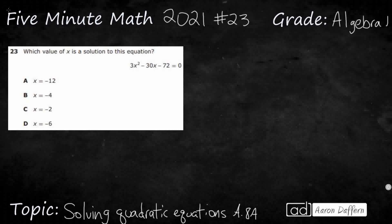So we need to find a value of x that is a solution. We need to find a zero to this quadratic equation. And one thing we could probably do is take a look at how it's written. It's already written in that standard form, that ax squared plus bx plus c, so that's good.